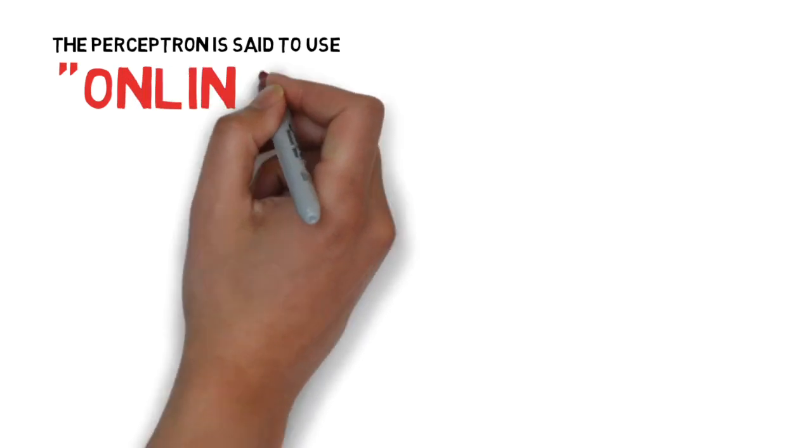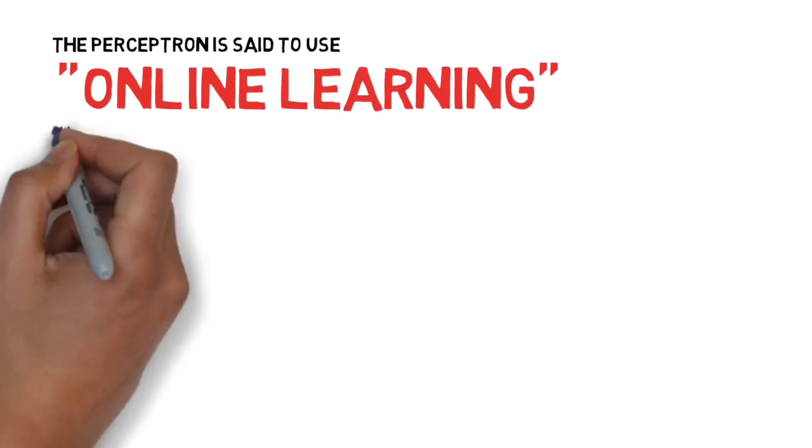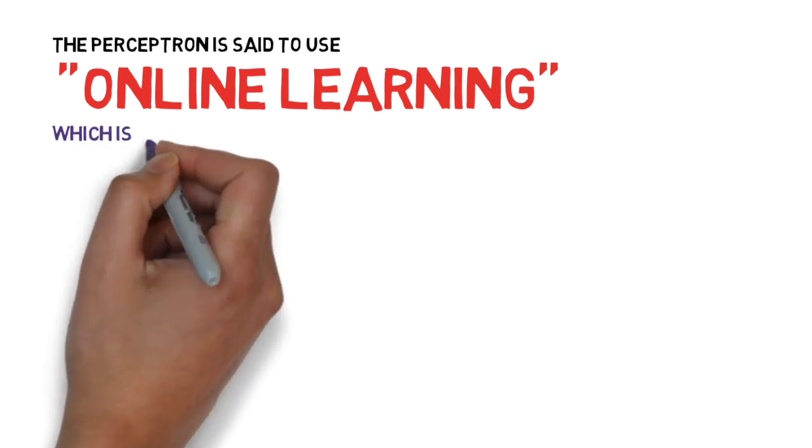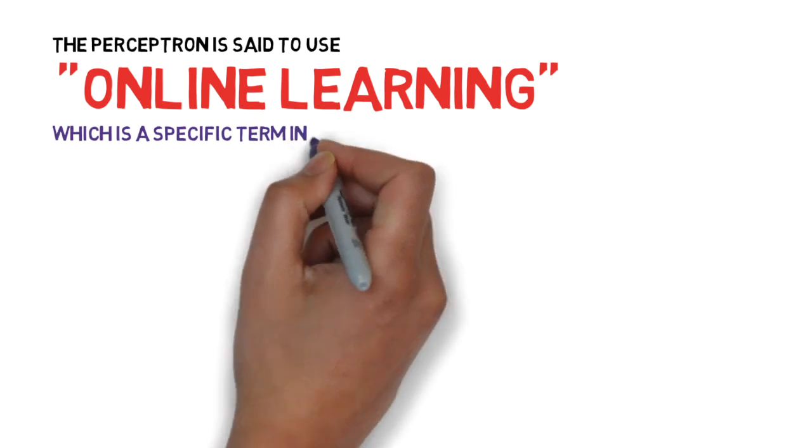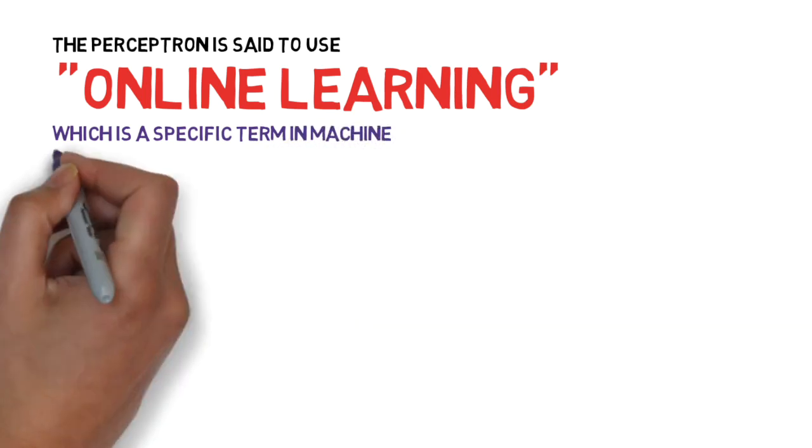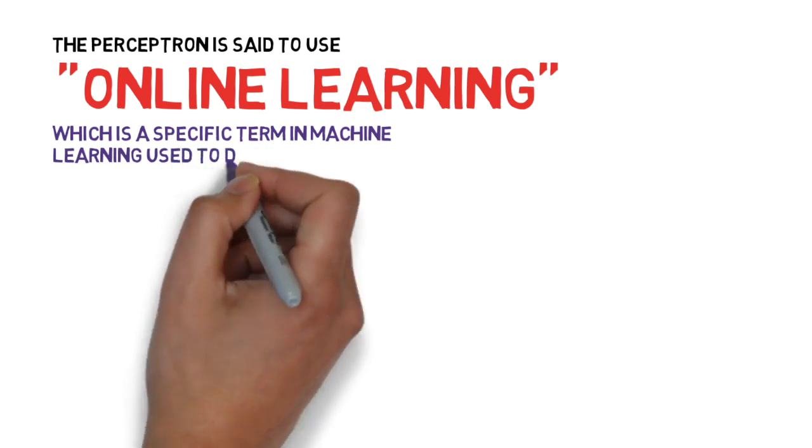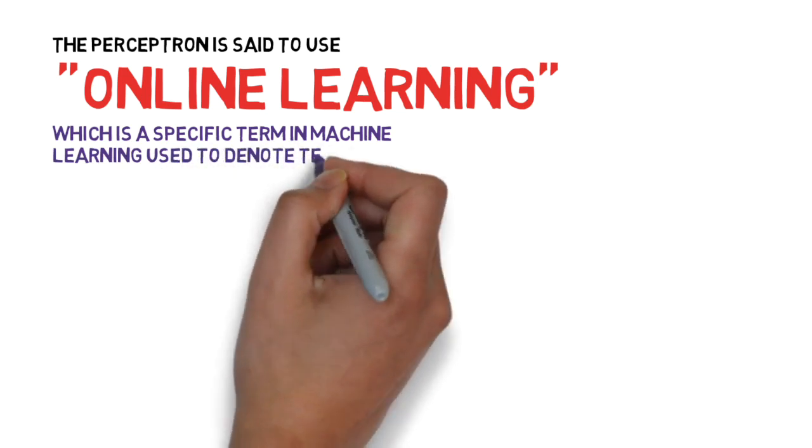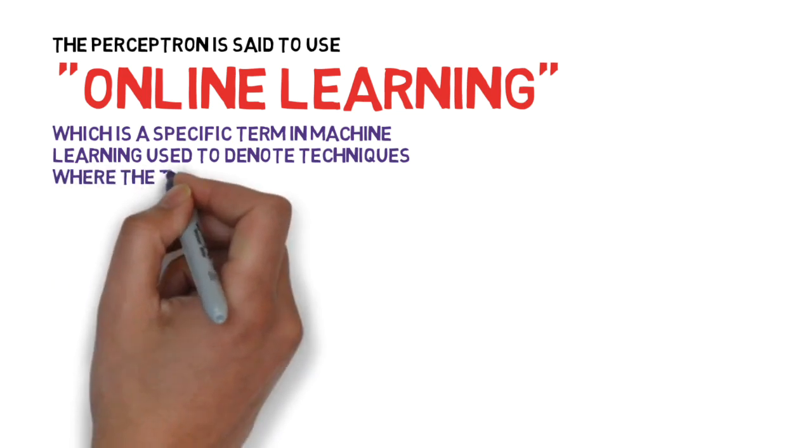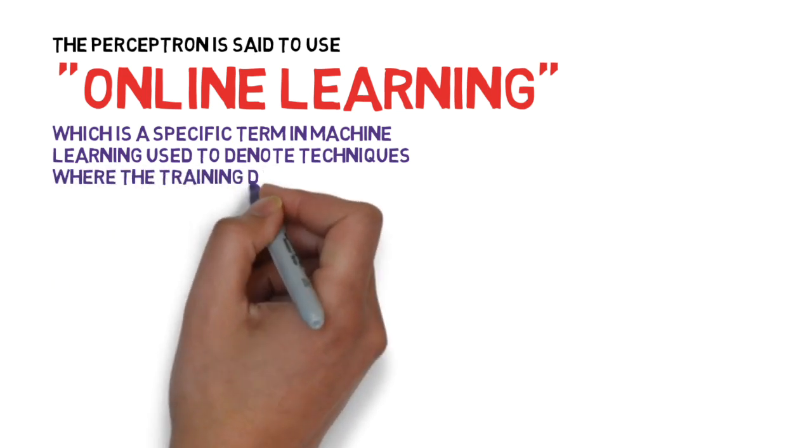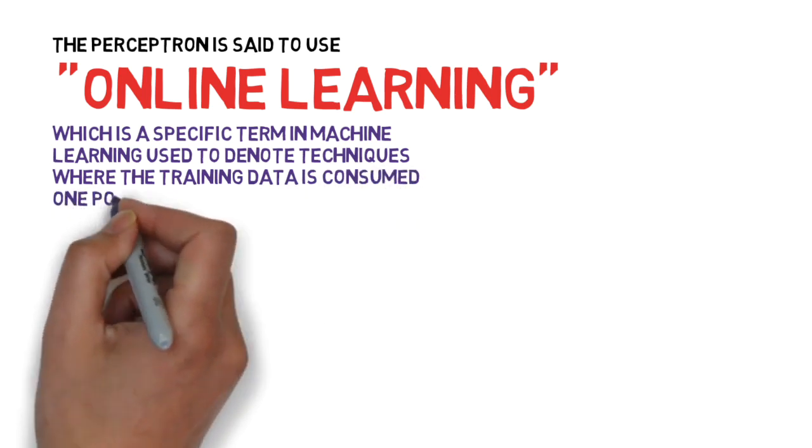A perceptron is said to use online learning. This is a specific term used in machine learning to denote techniques which consume one data point at a time. So in these techniques, the training data is taken one data point at a time, some step is performed, and then the next point in the training data is consumed.